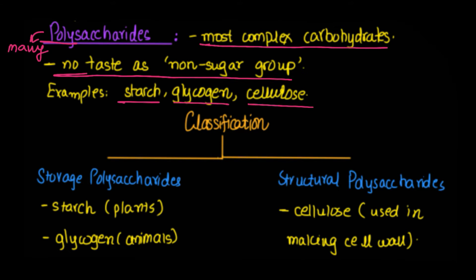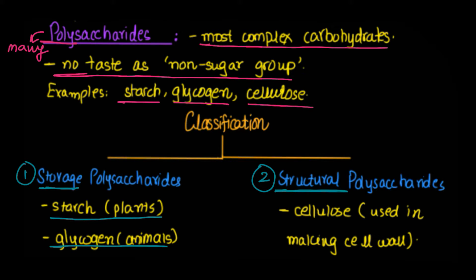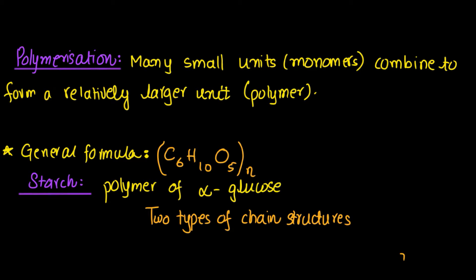There are two types of polysaccharides: storage polysaccharides and structural polysaccharides. Storage polysaccharides are used for storage purposes — examples include starch, used as a form of carbohydrate storage in plants, and glycogen, used in animals. Structural polysaccharides are used for structural purposes — for example, cellulose, which is used in the making of the cell wall.